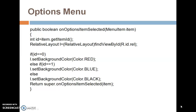If the id equals 0, we set the background color of the relative layout to red. Else if the id equals 1, then l.setBackgroundColor(Color.BLUE) sets the background color to blue. Otherwise l.setBackgroundColor(Color.BLACK) sets the background color to black by default.